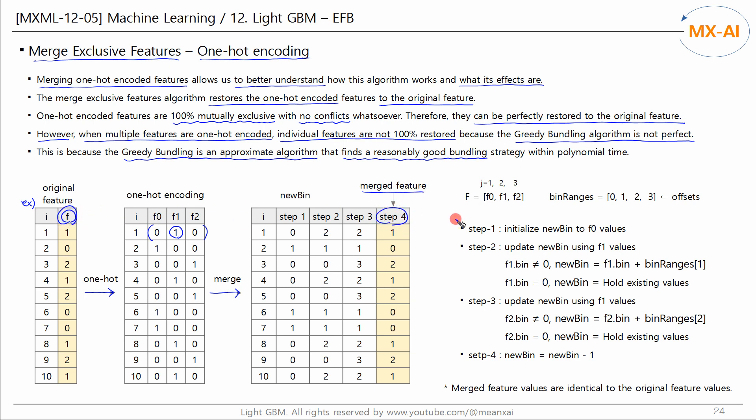Let's take a look at this process. For example, let's assume that the feature list F and the bin ranges list we looked at in the previous video are as follows. Since one-hot encoded features range from 0 to 1, the first offset is 1. And the second offset becomes 2 by adding 1 to the first offset.